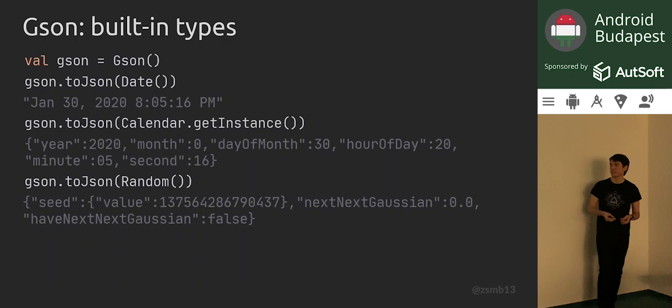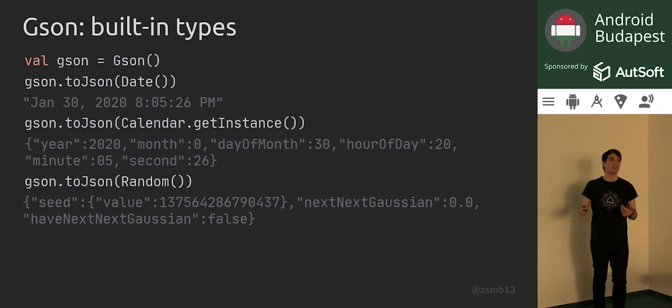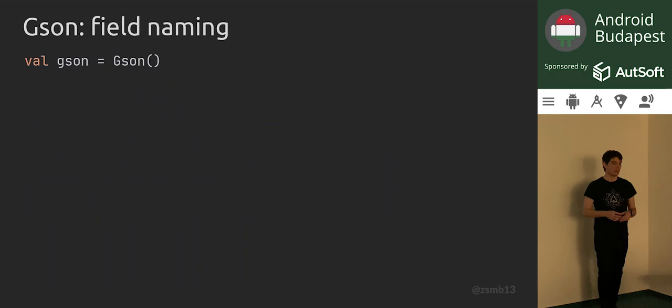Of course, if you're communicating between different JDK versions or running this same code on different Java versions on the client side, you might get different results from GSON — which is again unpredictable.